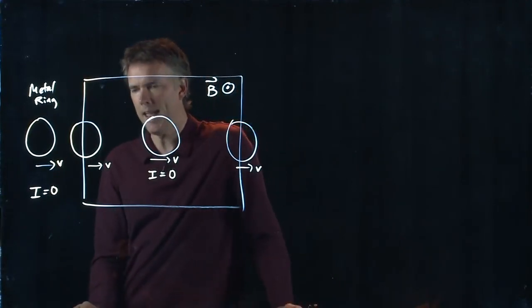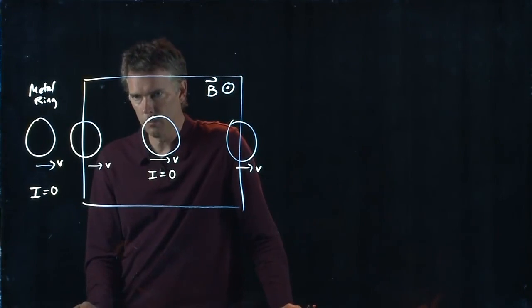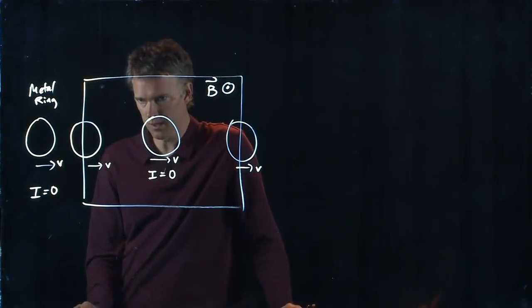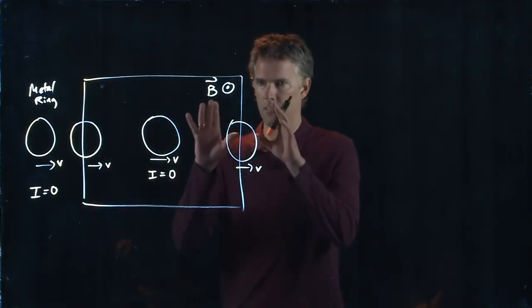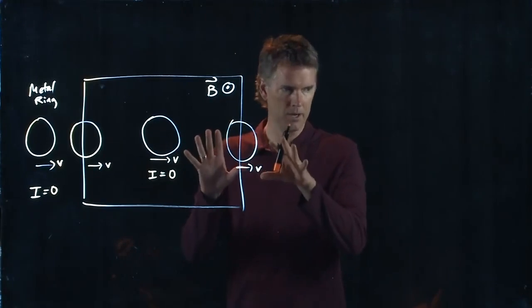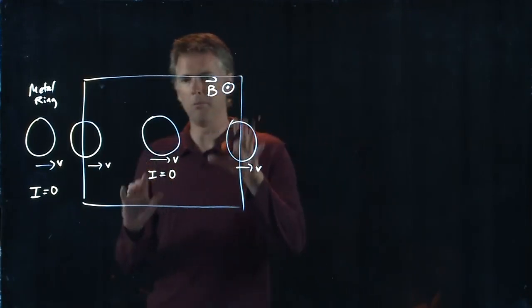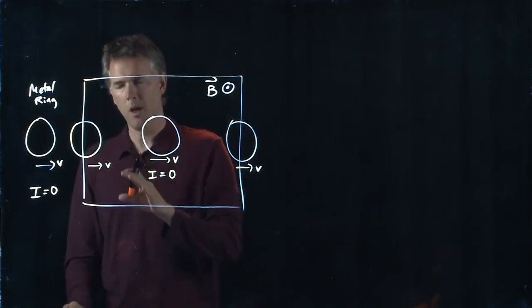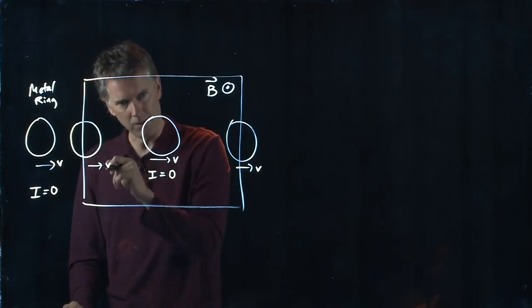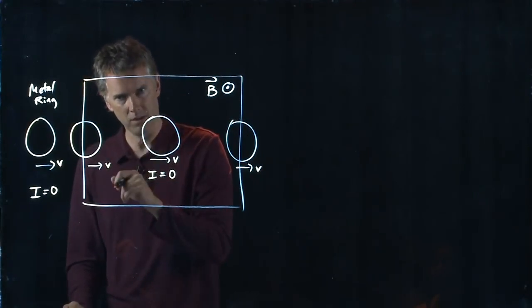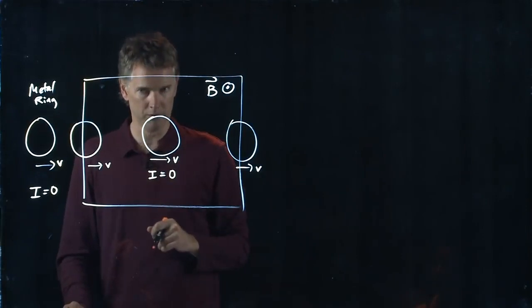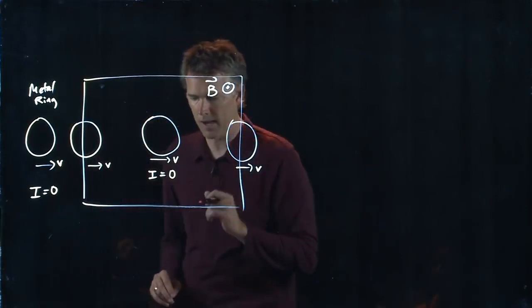So the flux is out of the page, which means that the ring wants to make a current that is going into the page, right? And this helps if you look over there at the computer monitor instead of looking at me. So B is coming out of the screen, but my ring wants to make a field that's going into the screen. So how does it do that?